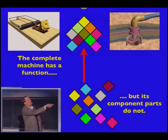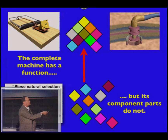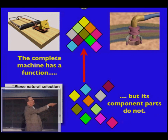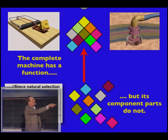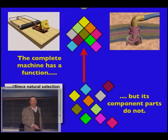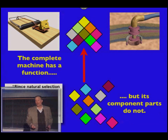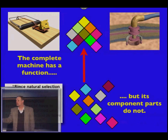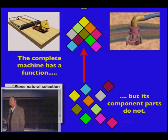Why does that mean that something like this is un-evolvable? Here's what Behe says. Since natural selection requires a function to select, an irreducibly complex system like this would have to arise all at once as an integrated unit for natural selection to work. These individual parts have no function, natural selection cannot make them, and the only thing that would instantaneously assemble them would be some sort of supernatural intelligent designer.